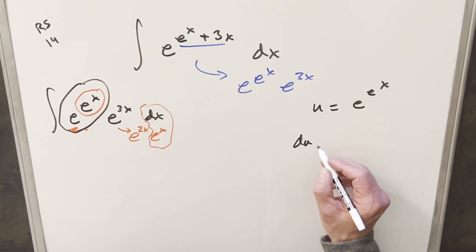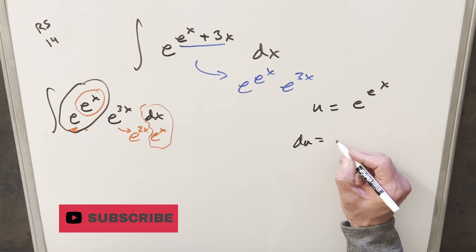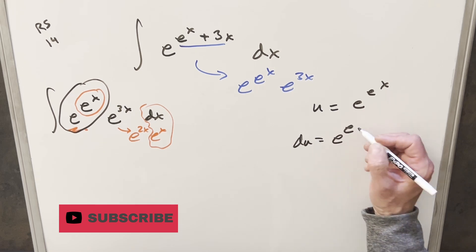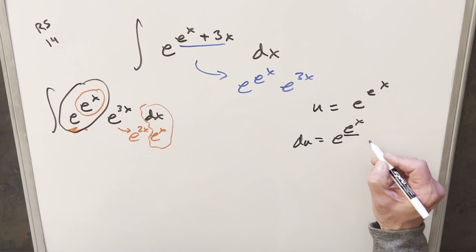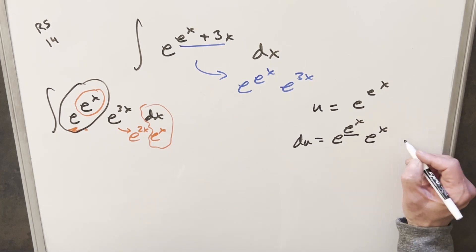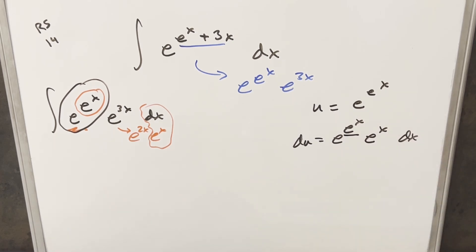Now let's go ahead and take a derivative. So the derivative of this, when we have base e, we're just going to get back the same thing. We're going to have e to the e^x. But then we need the chain rule derivative of this. It's going to give me an e^x dx.